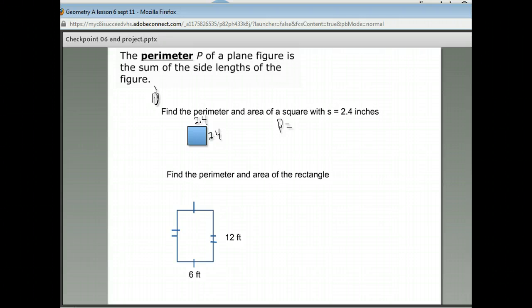So you can use the formulas or you can just use your logic. The perimeter of a square, all four sides are the same length. So you can do 4 times 2.4 since you have four sides that length. Or you can add 2.4 together four times. So you can also just do 2.4 plus 2.4 plus 2.4 plus 2.4. Either way, you'll get 9.6 for the perimeter.